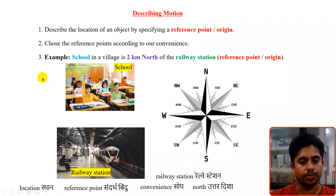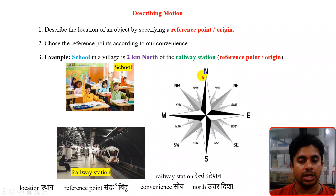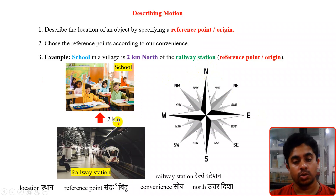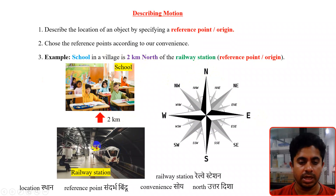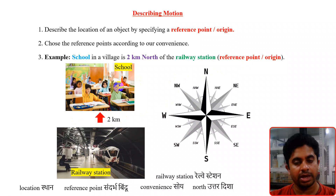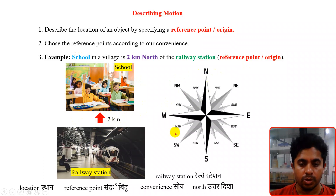Suppose this is the railway station, and we want to define the location of the school. The north direction is the upward direction. The school is located two kilometers north of the railway station. This is a basic diagram showing simply how we can make use of directions to describe a location.